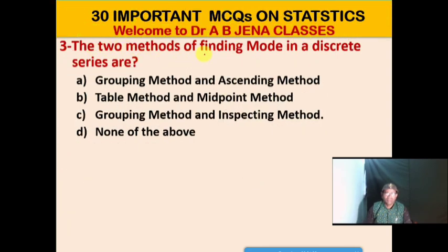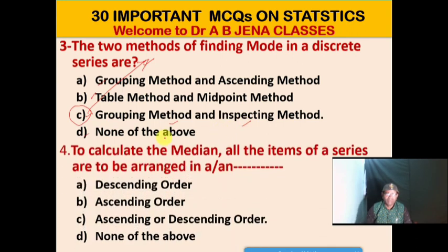Next MCQ: Two methods of finding mode in a discrete series are what? A. Grouping method and ascending method. B. Treble method and midpoint method. C. Grouping method and inspecting method. D. None of the above. C is the right option. Two methods of finding mode in a series are grouping method and inspecting method.